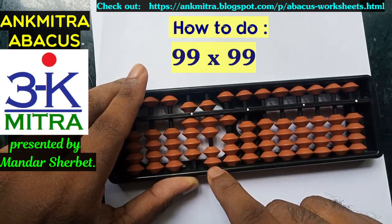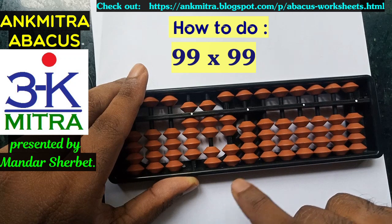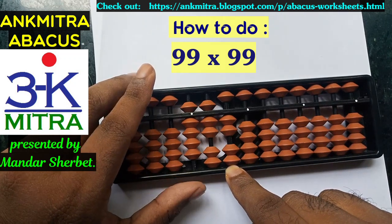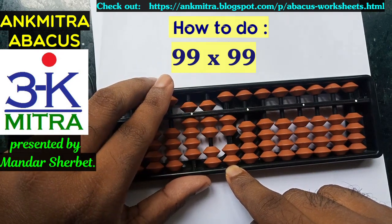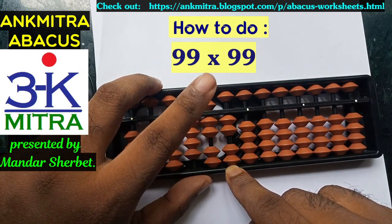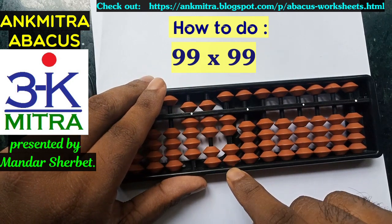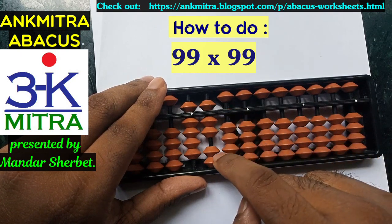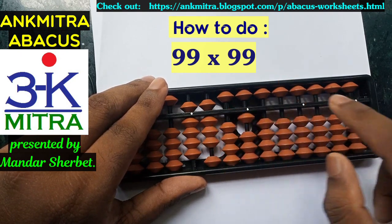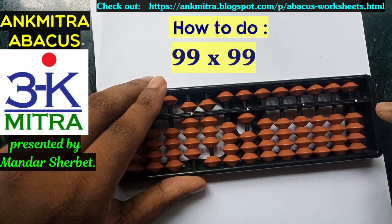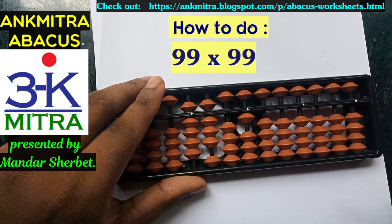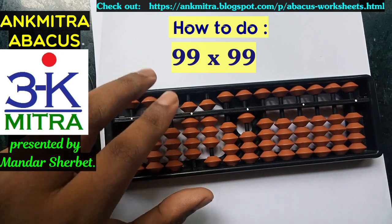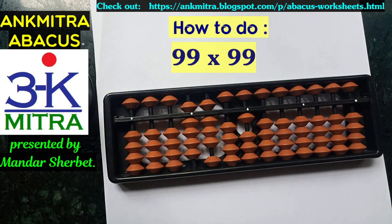The final answer that we have for 99 multiplied by 99 is 9801. I hope this clarifies the difficulty that the particular subscriber had, and I hope this will be useful to other viewers as well.